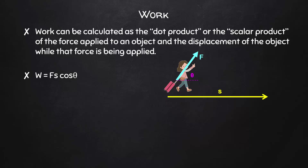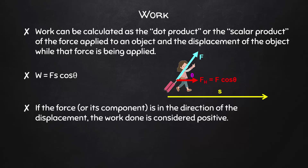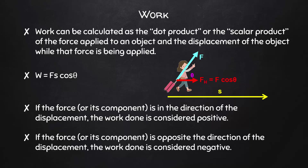Having the cosine of theta in the equation is basically building in the calculation of the horizontal component of the force. If the force, or its component, is in the direction of the displacement, the work done is considered positive. If the force is opposite the direction of the displacement, the work done is considered negative.